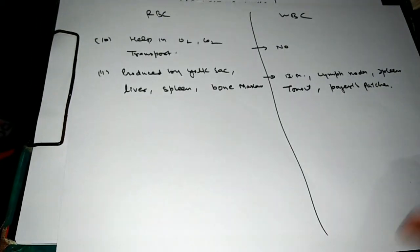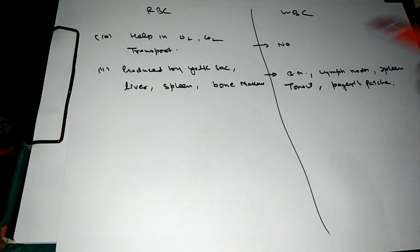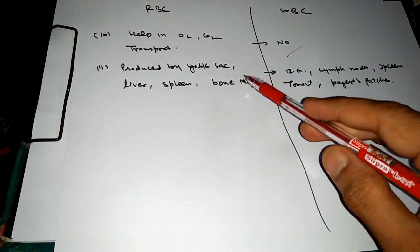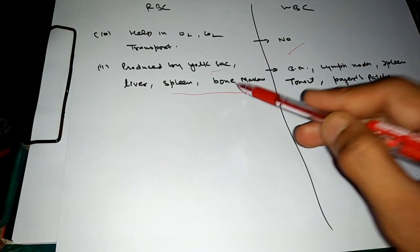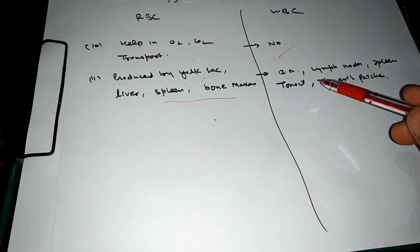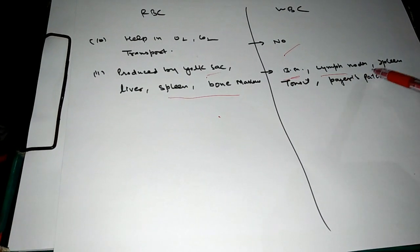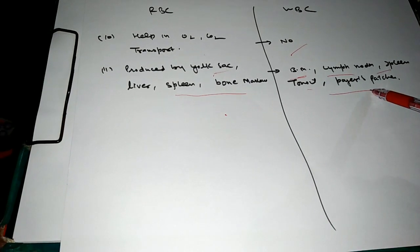Next, the RBC helps in oxygen and carbon dioxide transport but the WBC don't. They are produced by the yolk sac, liver and spleen and bone marrow. And WBC are produced in the bone marrow, lymph node, spleen, thymus, Peyer's patches.